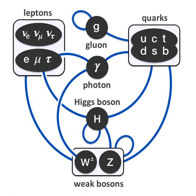Although the Standard Model is believed to be theoretically self-consistent and has demonstrated huge successes in providing experimental predictions, it leaves some phenomena unexplained and falls short of being a complete theory of fundamental interactions. It does not fully explain baryon asymmetry, incorporate the full theory of gravitation as described by general relativity, or account for the accelerating expansion of the universe as possibly described by dark energy. The model does not contain any viable dark matter particle, and does not incorporate neutrino oscillations and their non-zero masses.